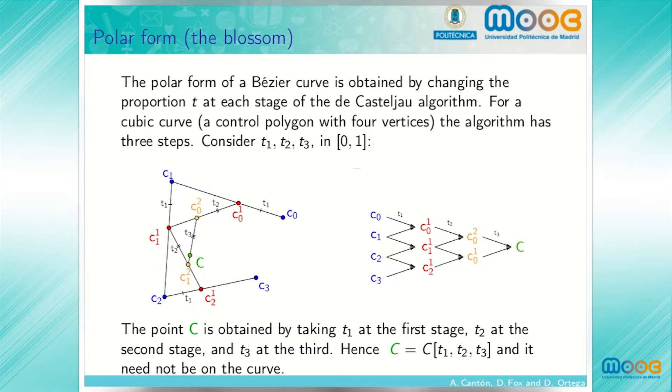The case in which t sub 1, t sub 2, and t sub 3 are all equal corresponds to the usual de Casteljau algorithm and would be a point on the curve. In general, for different values of t sub 1, t sub 2, and t sub 3 that are not equal, c need not lie on the curve.